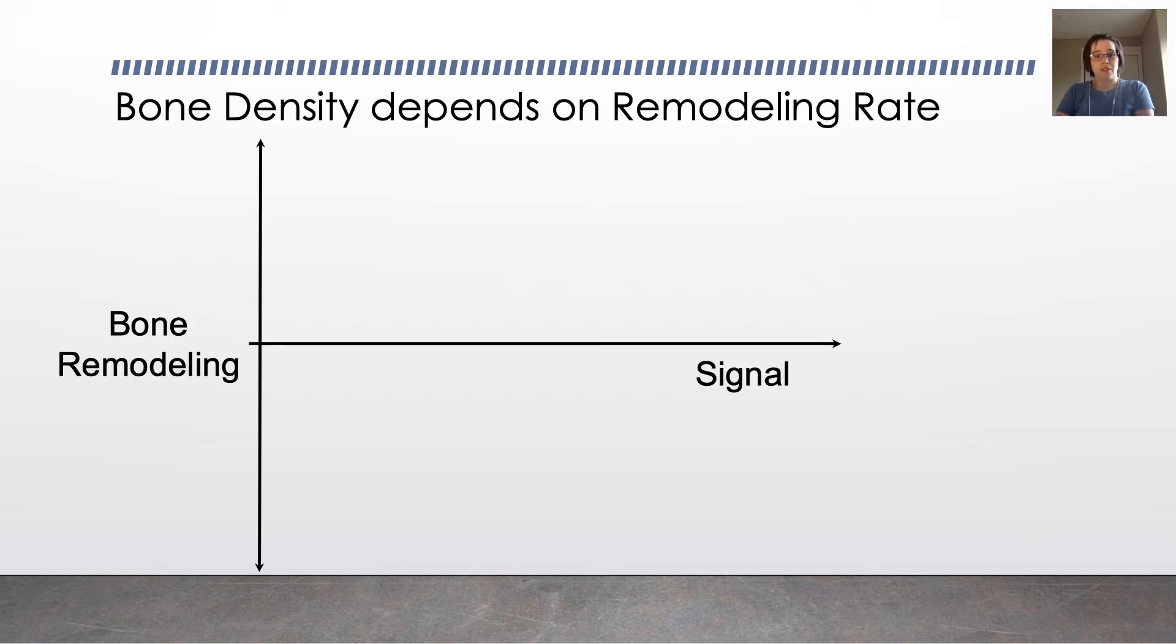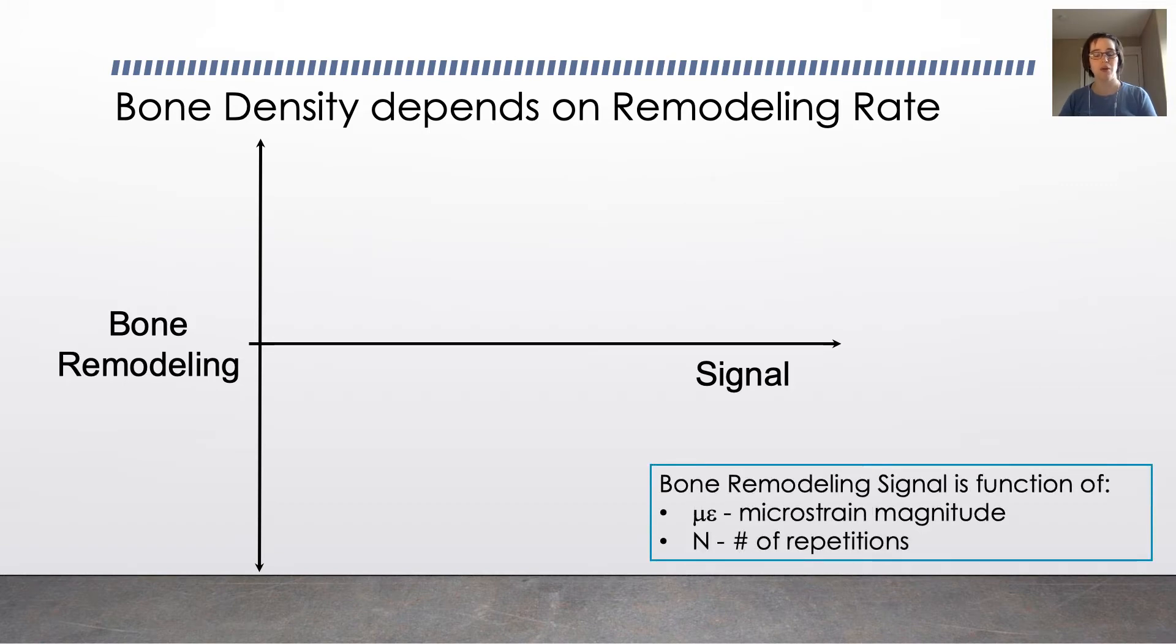Bone density depends on the remodeling rate of bone. Bone is constantly remodeling. All through your life, bone is being resorbed and being deposited. And how much it's being resorbed or created depends on the signal, the bone remodeling signal, which is a function of microstrain, so how much it's being loaded, and the number of repetitions, so how often it's being loaded.